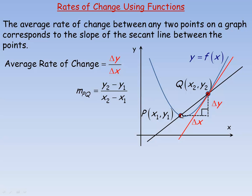Now, if we want to get an approximation for the actual slope of the tangent line — that's the red line here — it's tangent at Q, it touches the curve only at Q. Then what we could do is take this point P and move it along the curve. So let's say we move P to that point right there, and then drew the secant from that new P point to Q. Notice that the slope of that new secant, the brown one, is a little bit steeper than the original secant.